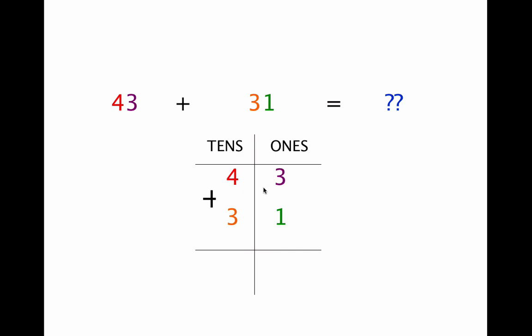Now remember, first you add the ones. They're on the right, you know. Then you add the tens. And on and on you go. So we add our ones column. 3 plus 1 equals 4. We write a 4. And then we add our tens. 4 plus 3 is 7. So we write 7. And that gives us our sum, 74.